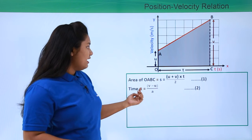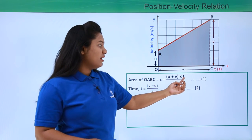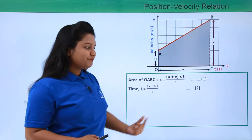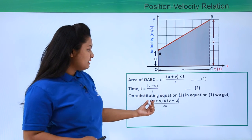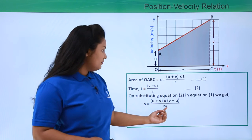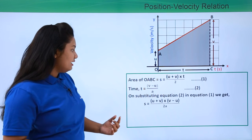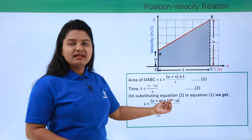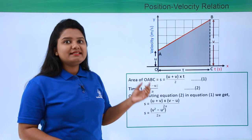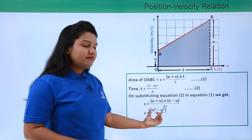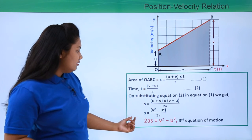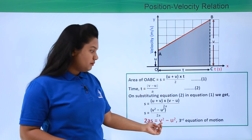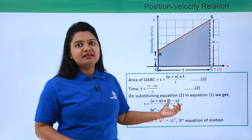We substitute the value of t from equation two into equation one, replacing t with (v - u) / a. So s = (u + v)(v - u) / (2a). Evaluating this using the identity (a + b)(a - b) = a² - b², we get s = (v² - u²) / (2a). On bringing 2a to the other side, we have 2as = v² - u², which is the third equation of motion.